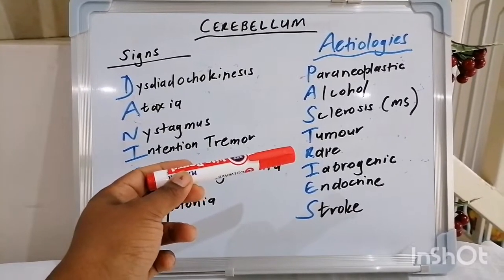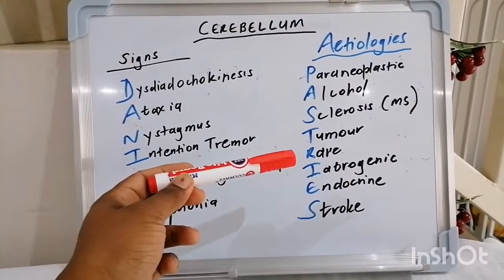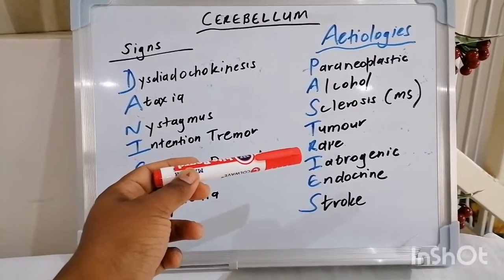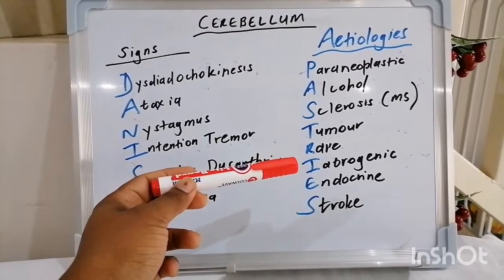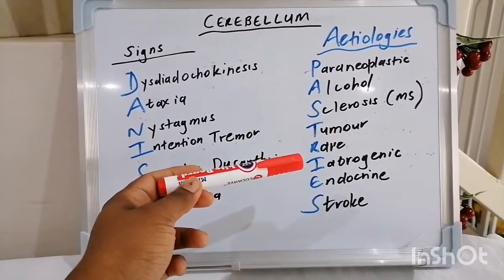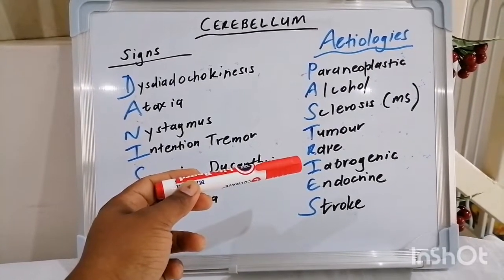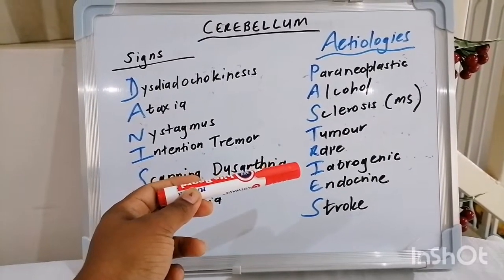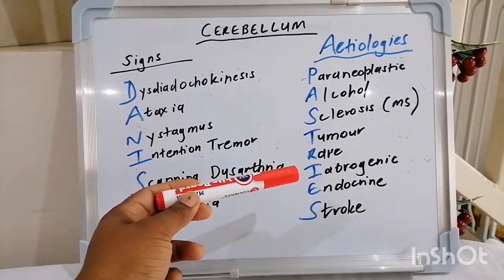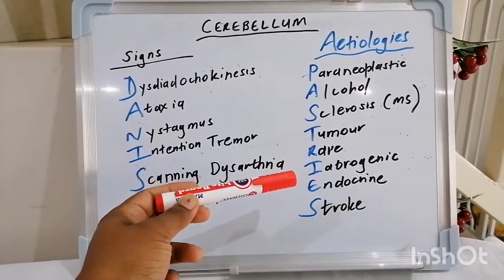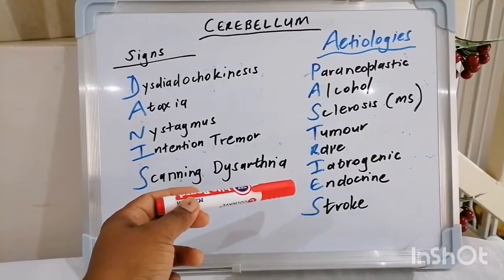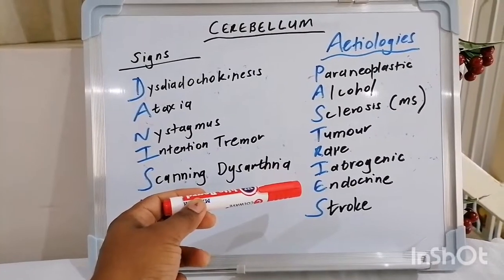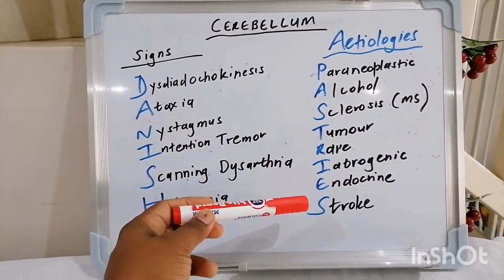R is for rare cerebellar syndromes, the likes of Friedreich's ataxia and ataxia telangiectasia. I stands for iatrogenic, especially in the setting of phenytoin toxicity, and also amongst your ARVs — efavirenz can also cause cerebellar issues.